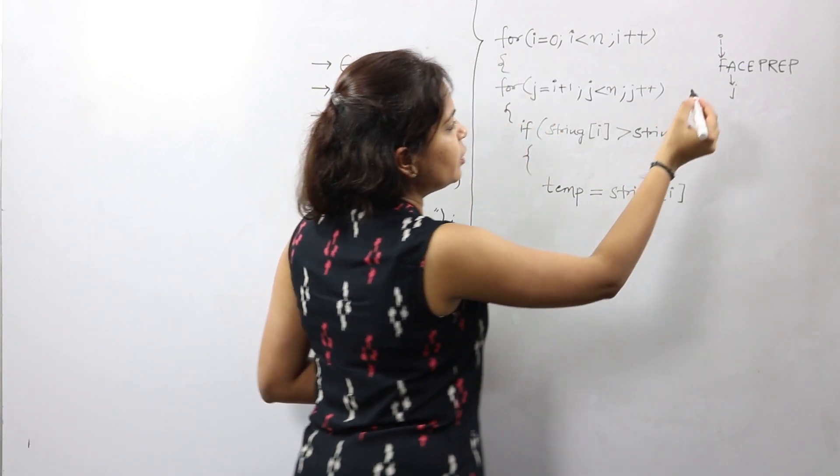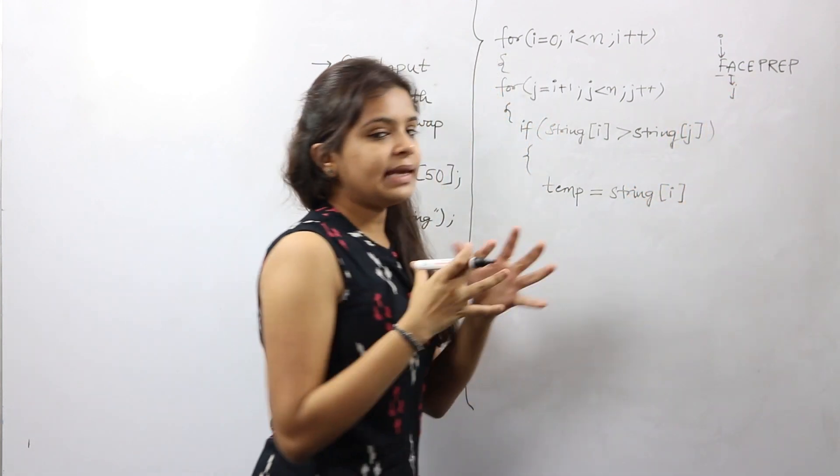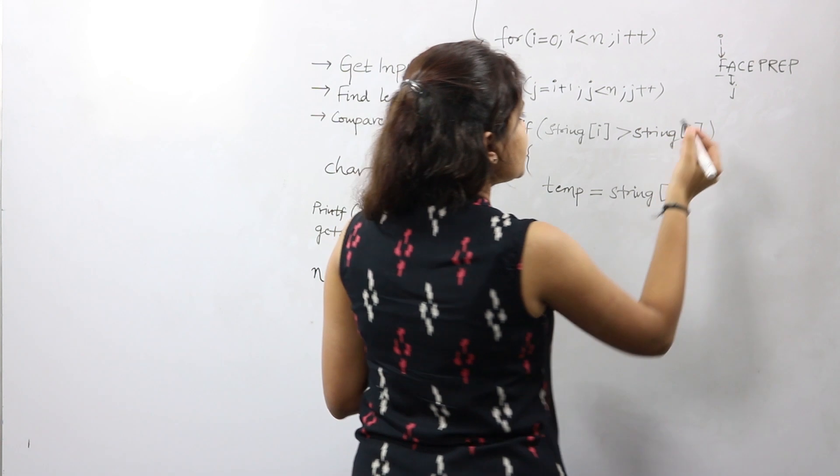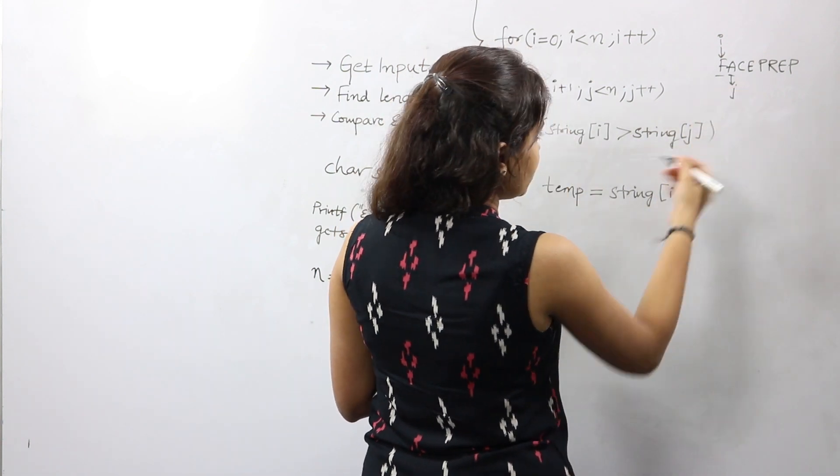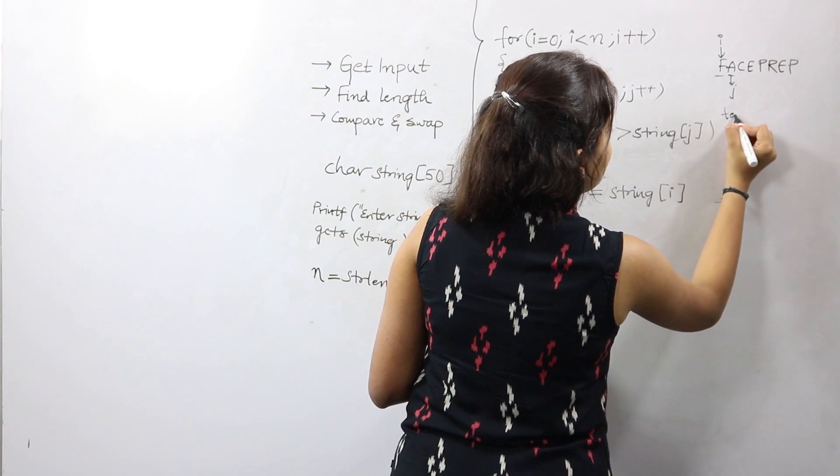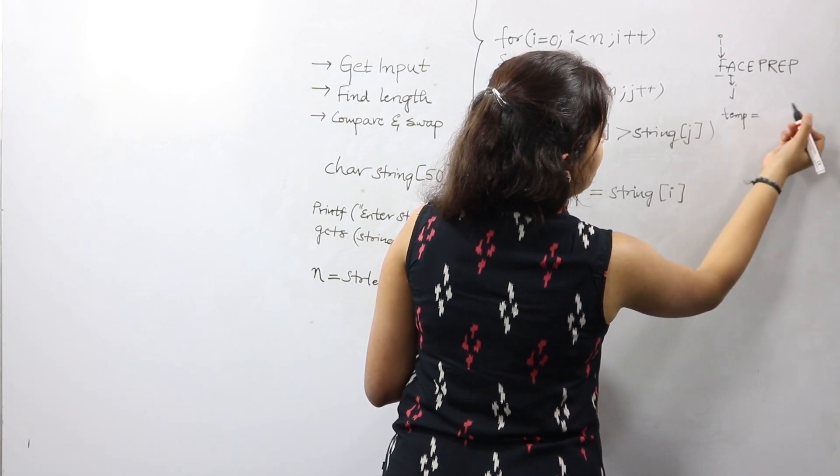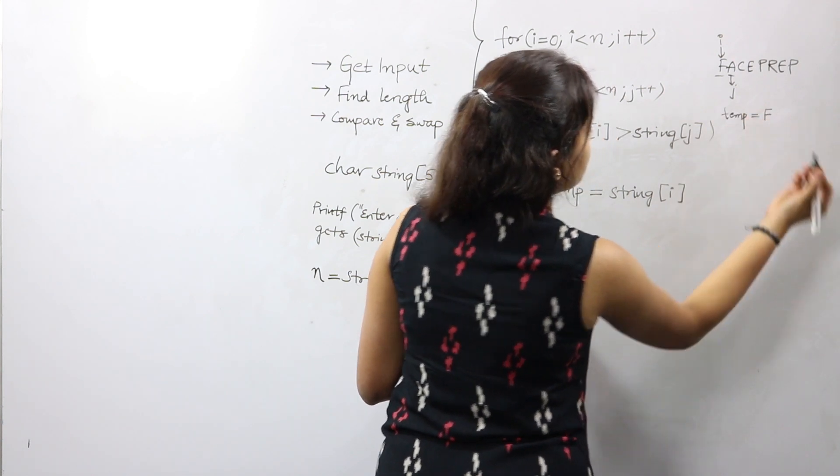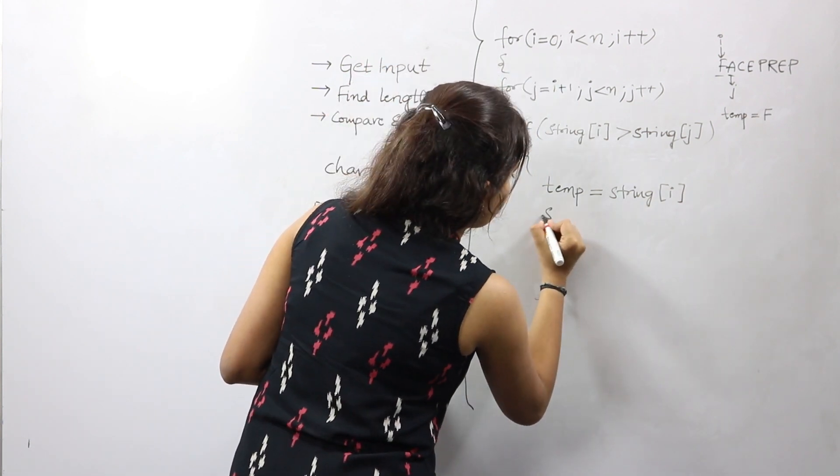So this temporary variable will be equal to string[i], basically F. When you compare F and A, obviously A is smaller, right? So at this point this condition gets satisfied and it is ready to swap. The temporary variable has the value F.